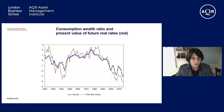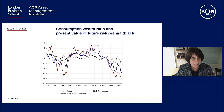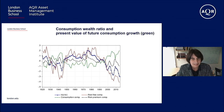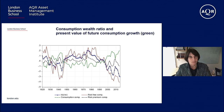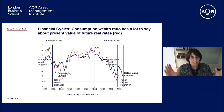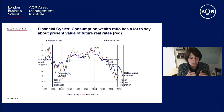Looking at the other two terms of the decomposition — risk premia in black and future consumption growth in green — the link with the consumption-wealth ratio is not tight. The consumption-wealth ratio does not have much to say about future risk premia or future consumption growth over long periods. But it does have information about future real rates. So the data — using only an accounting identity, with no model assumptions — tells us that the consumption-wealth ratio today tells us something about the movements in future real rates.